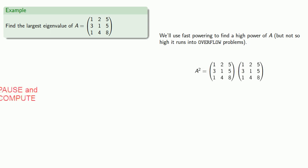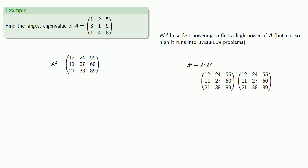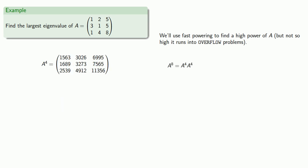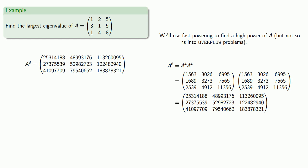I can find A squared. A to the 4th is A squared times A squared. A to the 8th is A to the 4th times A to the 4th. And if we try to find A to the 16th, we'll end up with floating point decimals, so we'll stop here.